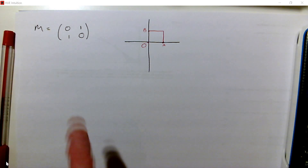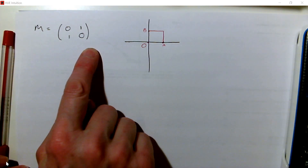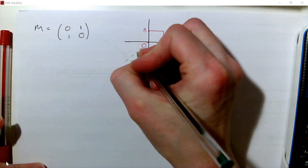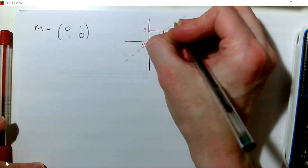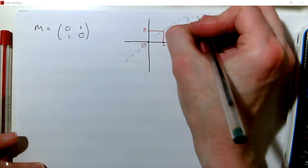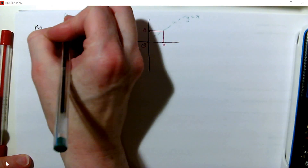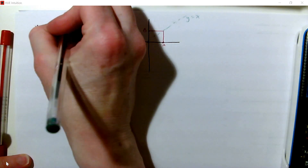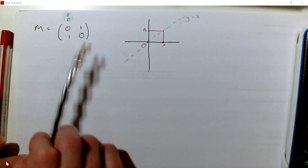So let's consider this matrix here. Remember, this represents a reflection in the line y equals x. I've drawn a unit square there. We know that the point represented by the position vector 1, 0 would be transformed to 0, 1.